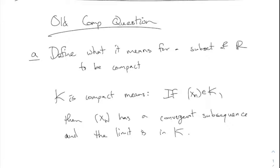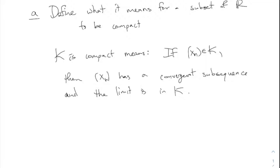Any sequence has a convergent subsequence and what it converges to is in K. Last time we had a theorem that said a set is compact if and only if it is closed and bounded. So that's another way to think of compactness, but this sequence definition is the definition of compactness. That was part A — just if you remembered it, full credit.